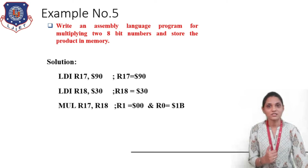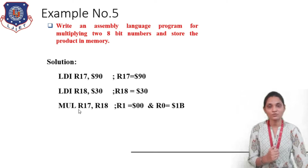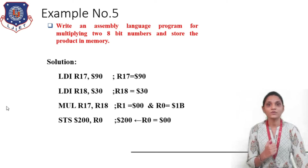Next we have the MUL instruction: MUL R17, R18. This will do the multiplication of the contents of R17 and R18, and the result is going to be stored inside register R1 and R0. R1 will be the MSB and R0 will be the LSB. So after this we will have 00 inside register R1 and 1B inside register R0.